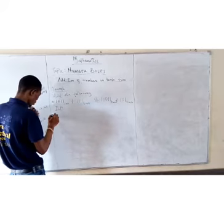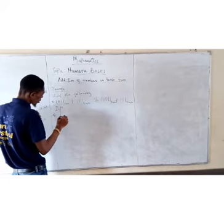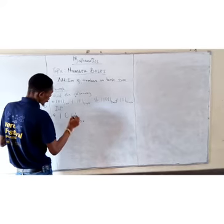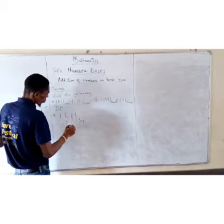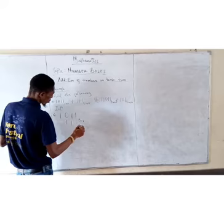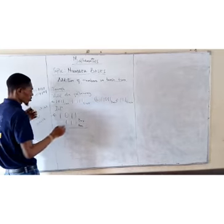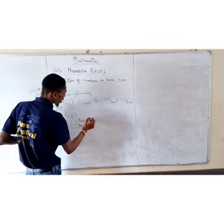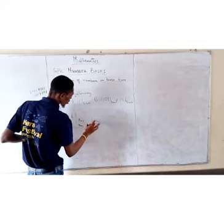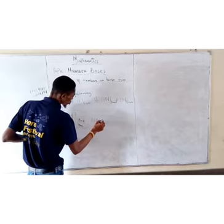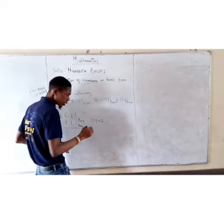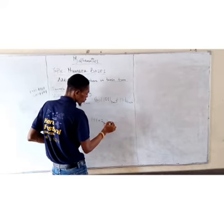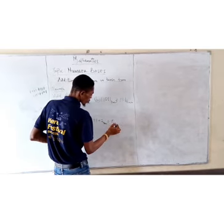For the first one, we have 1011₂ plus 111₂. Now, this is how it works with your normal addition: 1 plus 1 is equal to 2 in base 10. In base 2, that is going to give us 10 in base 2.